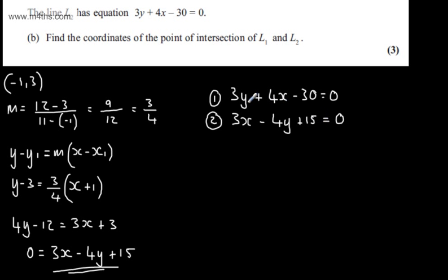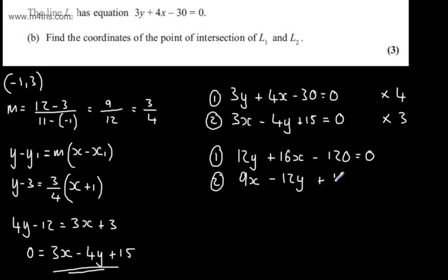At this stage we've got lots of different choices. What I'm going to do here is simply go ahead now and multiply the top equation by 4 and the bottom equation by 3. So equation 1 will become 12Y plus 16X minus 120 will be equal to 0. Equation 2 will become 9X minus 12Y plus 45 is equal to 0. You might see this slightly easier if we wrote this now as 16X plus 12Y is equal to 120 for equation 1. And for equation 2 we could write this now as 9X minus 12Y is equal to minus 45.